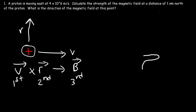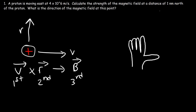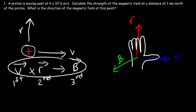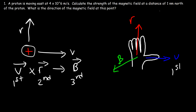Using the right-hand rule: point your thumb in the direction of the first vector on the left, which is the velocity. Then point your four fingers in the direction of the second vector, which is the position vector. So v is directed east in the positive x direction, and r is directed north in the positive y direction. The magnetic field — the third vector — should be coming out of the palm of your hand. When finding a cross product: the first vector is associated with your thumb, the second with your four fingers, and the third comes out of the palm.